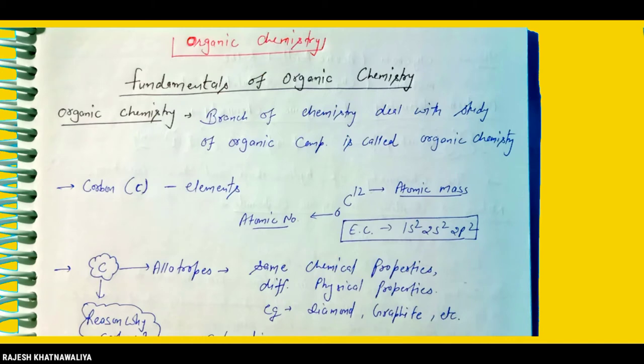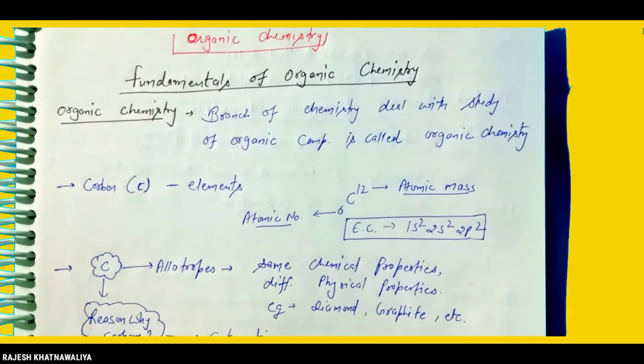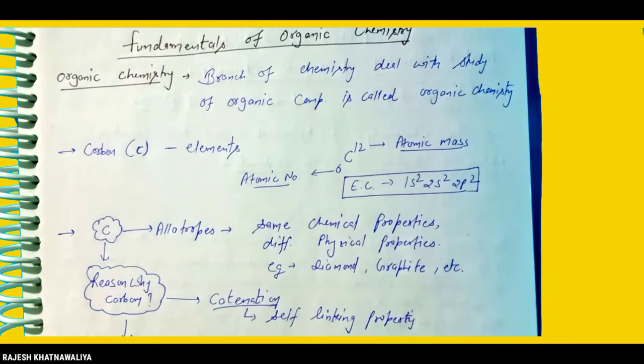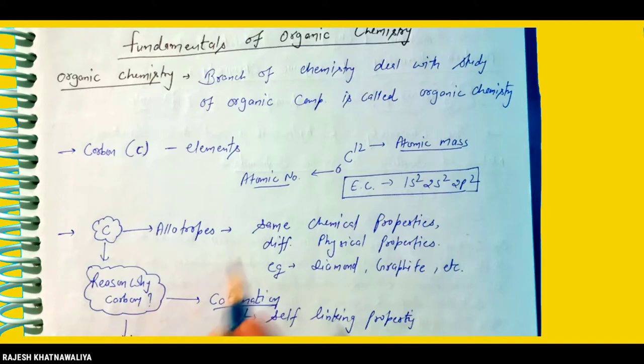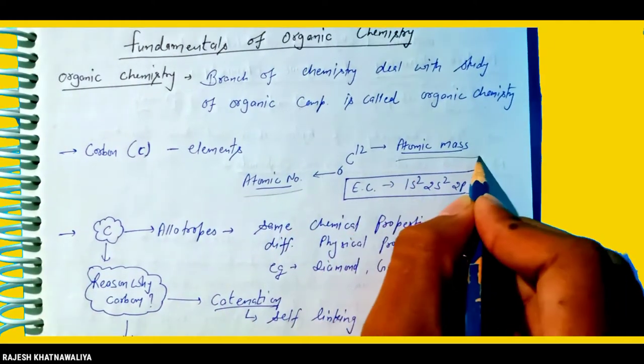Organic chemistry is the branch of chemistry that deals with the study of organic compounds. Carbon is the element of main importance in organic chemistry, characterized by its atomic number, atomic mass, and electron configuration.